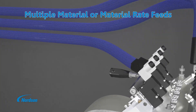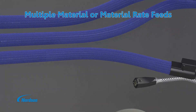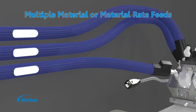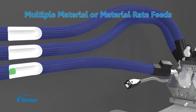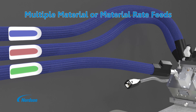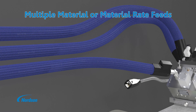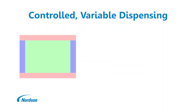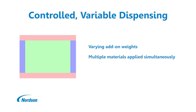Two or three hoses can be used to supply various flow rates or even different materials to the applicator. Dispensed patterns are developed using a combination of customized shim cutouts, material porting and paths, and module open and close signaling.